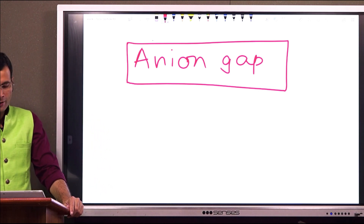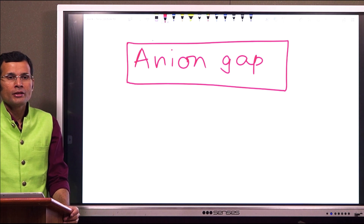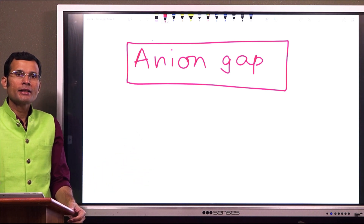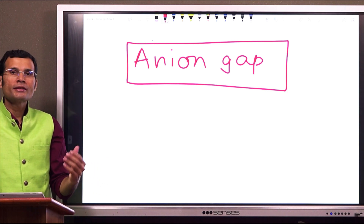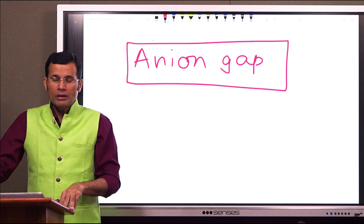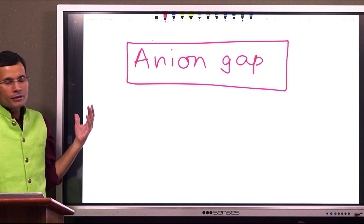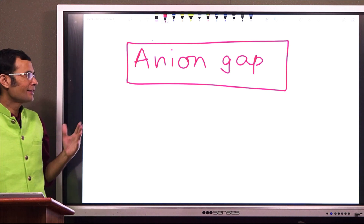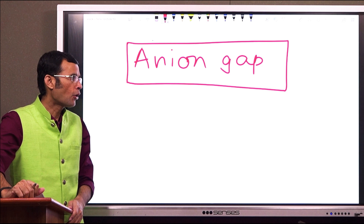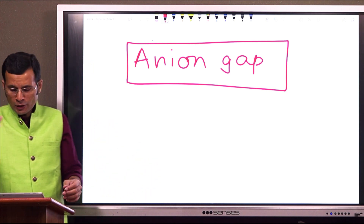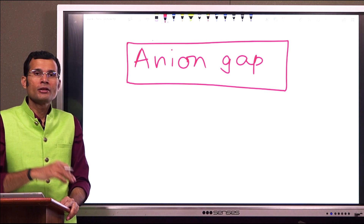Let's look at another small concept in physiology — and in fact biochemistry and medicine — called the anion gap. Let's try to understand what the serum anion gap is and what its implication is. First of all, there is a law of electroneutrality: in all the body fluid compartments, the number of cations and anions should be equal.